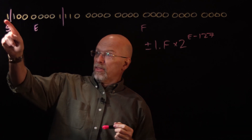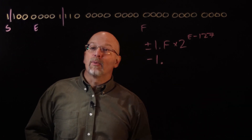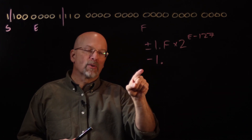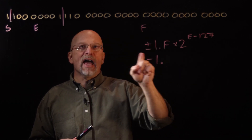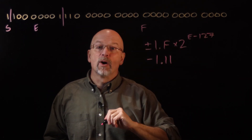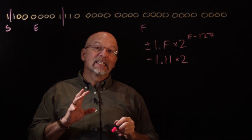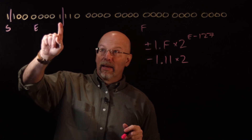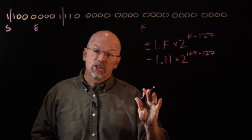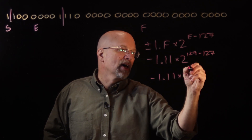So what does this value equal? The S is a 1, so we know it's a negative number. It is assumed we always have a 1 point — there are a couple of cases where we don't, but right now we assume there is a 1 point. The F in our case is just 1, 1 followed by all zeros, so that's simply 1.1. We multiply by 2. E in unsigned binary is 128 plus 1, that's 129, so we have 129 minus 127, giving us negative 1.11 times 2 to the 2.